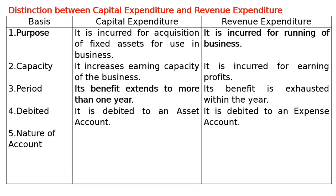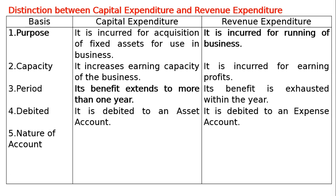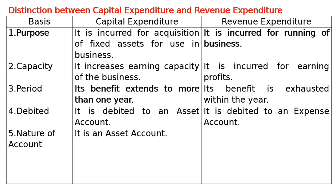The fifth basis is nature of account. In case of capital expenditure, it is an asset account — for example, buying assets like car, land and building, plant and machinery. The nature of account maintained for capital expenditure is an asset account. Whereas, in case of revenue expenditure, it is an expense account — it is a nominal account.